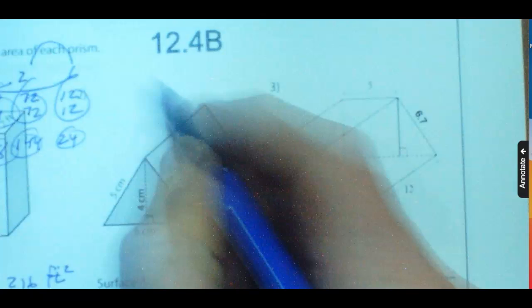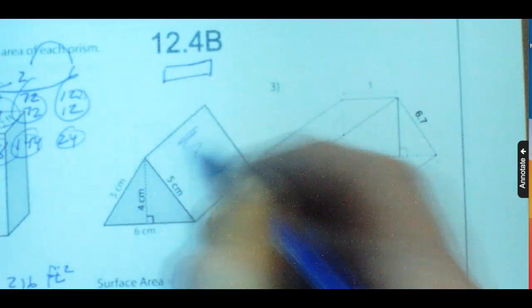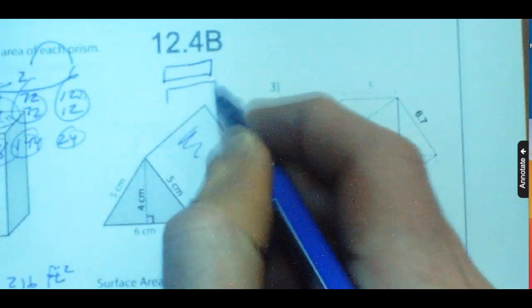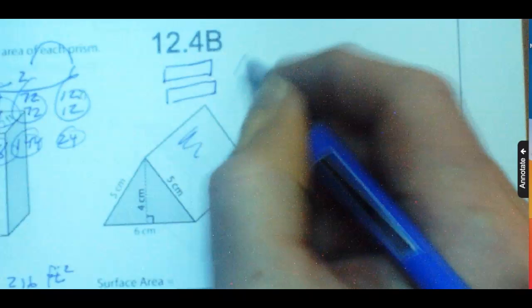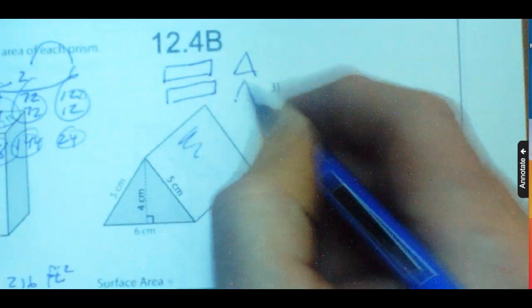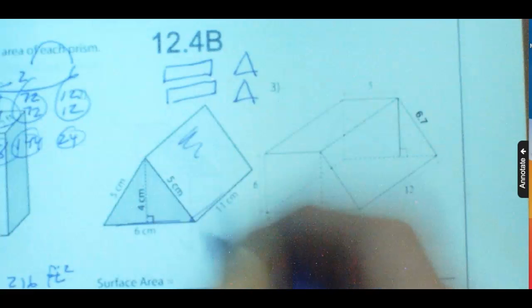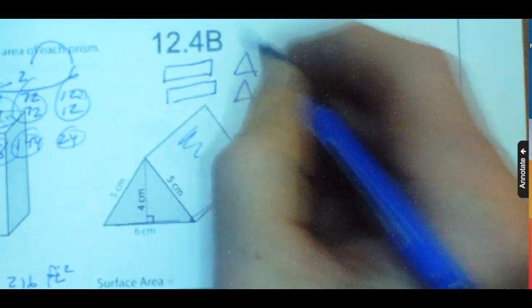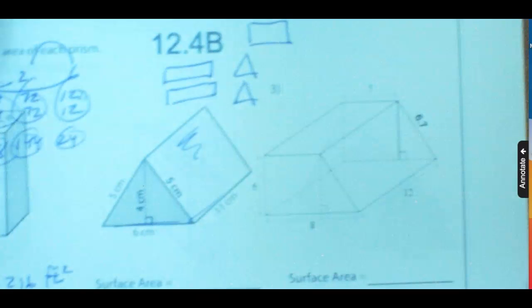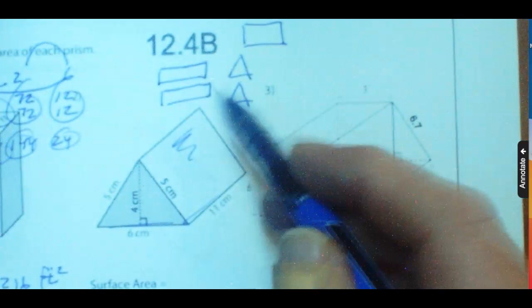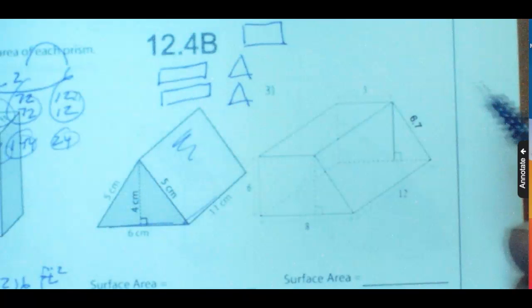You're going to have here's the rectangular side here. Here's the other rectangular side, which is over here. Then you've got the two triangles, front and the back. You also have this bottom piece. So I like to draw it out. You think about it, a triangular prism is going to have three rectangular sides. One, two, three, and then the two ends. And then I figure out what the measurements of those are.